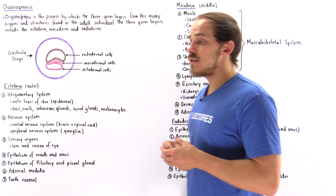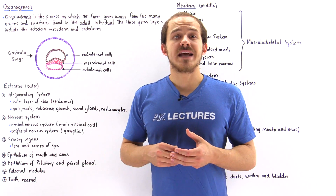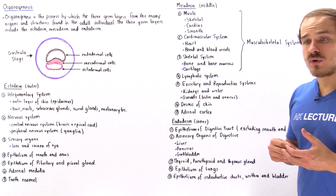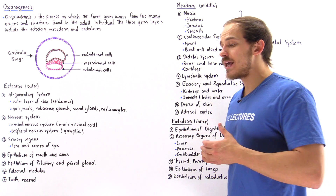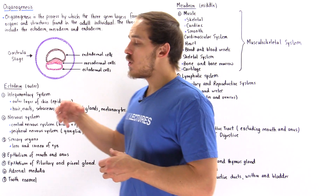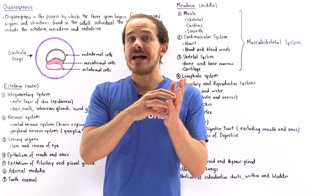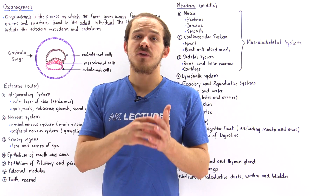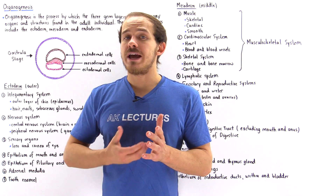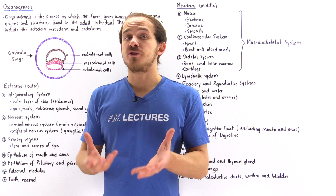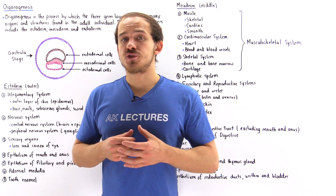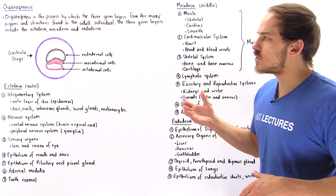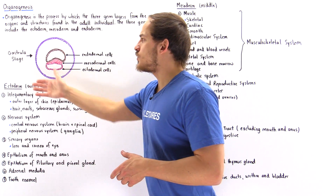Let's begin by discussing the early process known as gastrulation. During early embryological development, gastrulation takes place — the blastocyst implants itself onto the endometrium, the lining of the uterus, and then gastrulation produces the three different germ layers. Let's take a cross-section of the gastrula stage of embryological development.